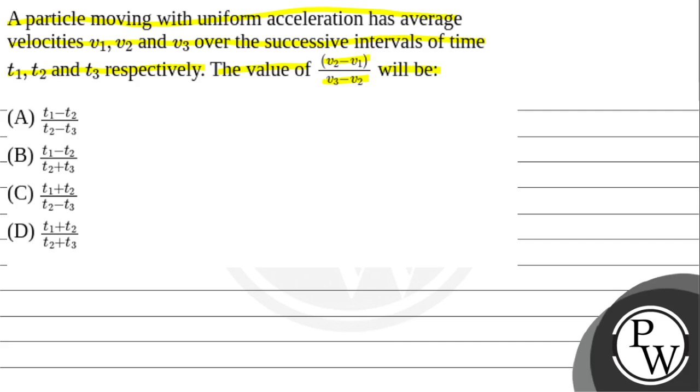Option C, t1 plus t2 divided by t2 minus t3. Option D, t1 plus t2 divided by t2 plus t3.